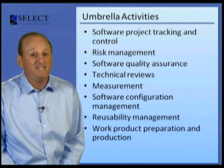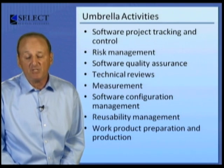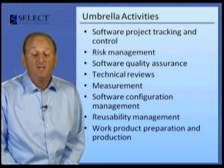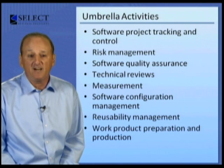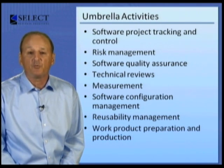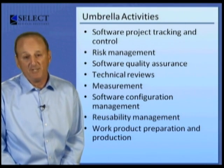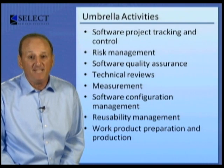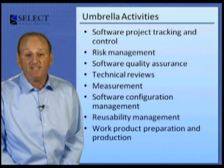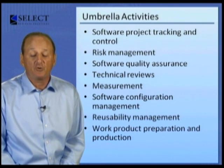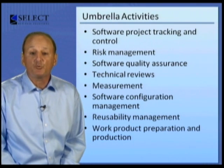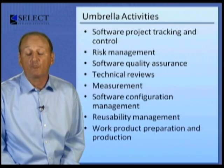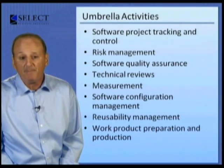It's very important to perform contingency planning, and risk management provides us with a mechanism for doing so. Software quality assurance is a pivotal umbrella activity that defines and conducts the activities required to ensure software quality. Technical reviews are actually part of software quality assurance, but they're listed separately because they have such a fundamental impact on the quality of the end product. Technical reviews assess work products in an effort to uncover and remove errors before they're propagated to the next activity.